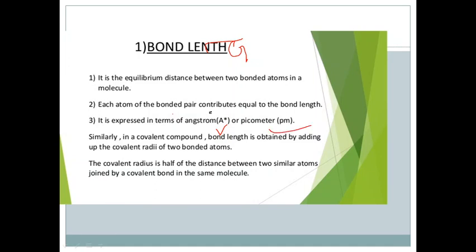Bond length is denoted by A star and picometer (pm). Similarly, in a covalent compound, bond length is obtained by adding up the covalent radii of two bonded atoms. How is bond length calculated? By adding the covalent radii of the two bonded atoms.